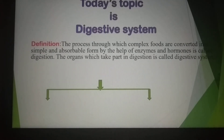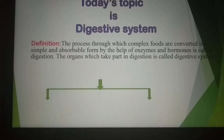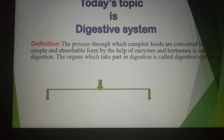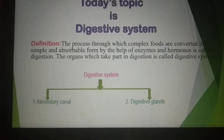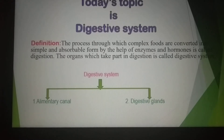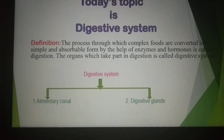The digestive system includes the lip, tongue, salivary glands, esophagus, stomach, small intestine, large intestine, and pancreas. The digestive system is divided into two parts: Number 1, the alimentary canal, and Number 2, the digestive glands.